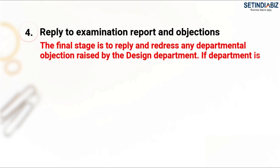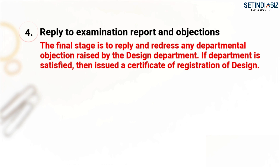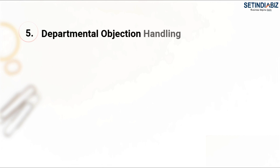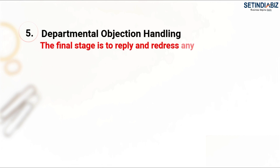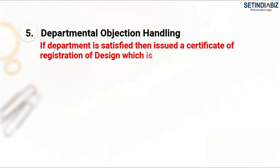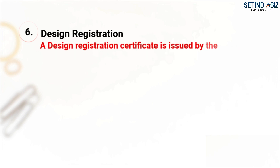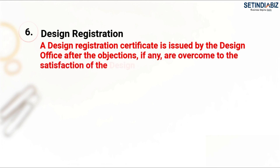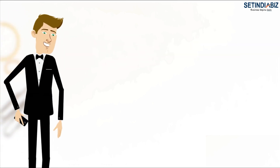Step 4 - Reply to Examination Report and Objections: The final stage is to reply and redress any departmental objections raised by the design department. If the department is satisfied, a certificate of registration is issued. The design registration certificate is issued by the design office after the objections, if any, are overcome to the satisfaction of the design office, and is valid for a period of 10 years.